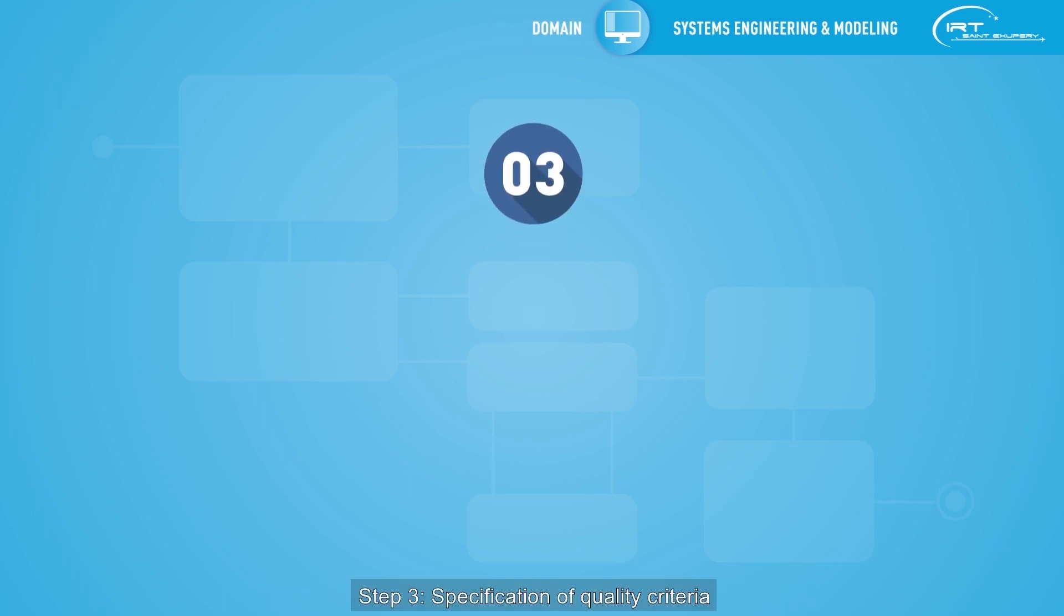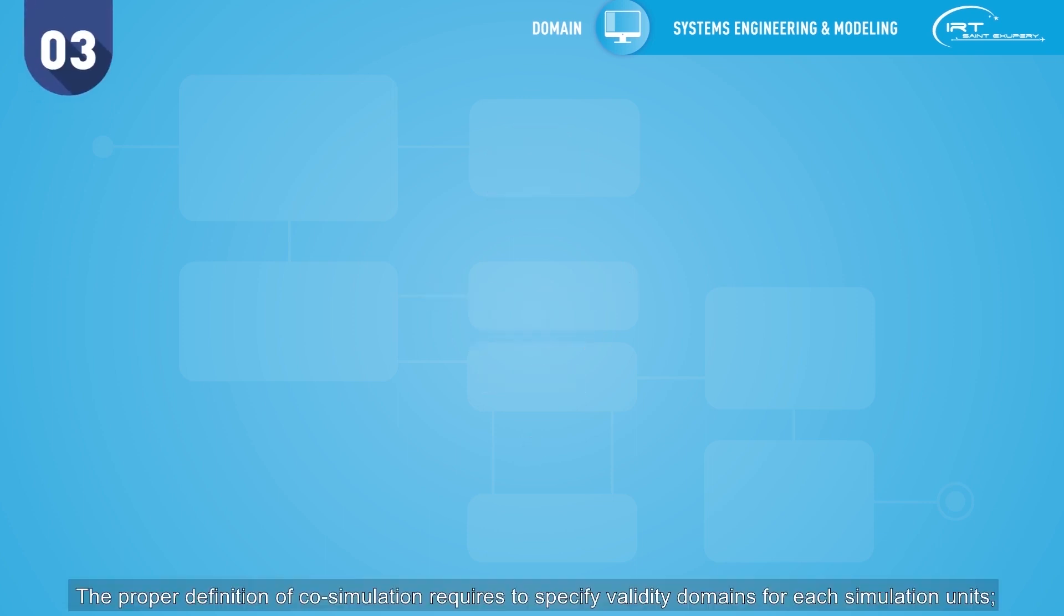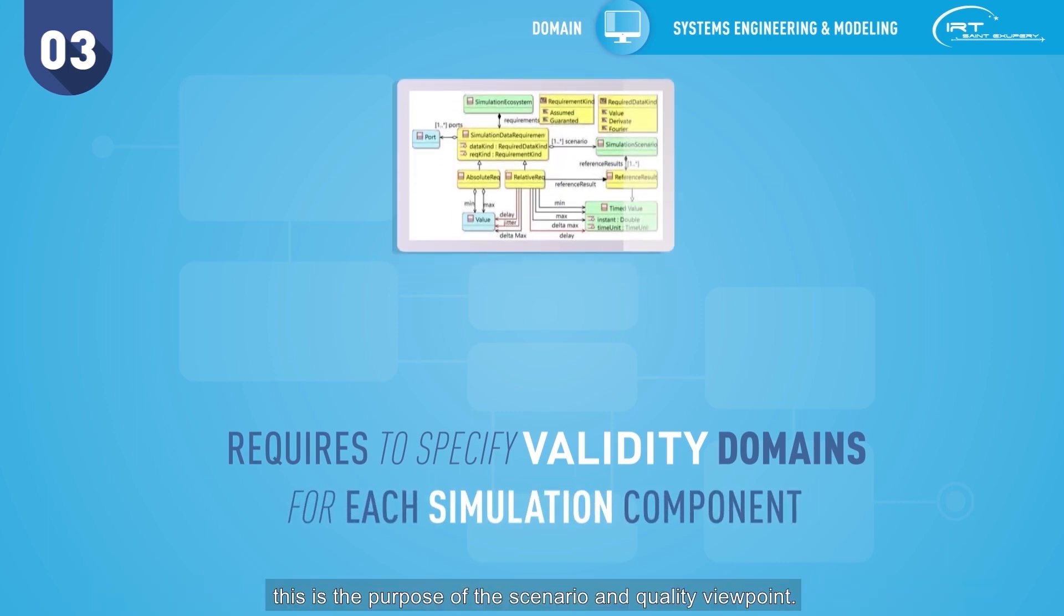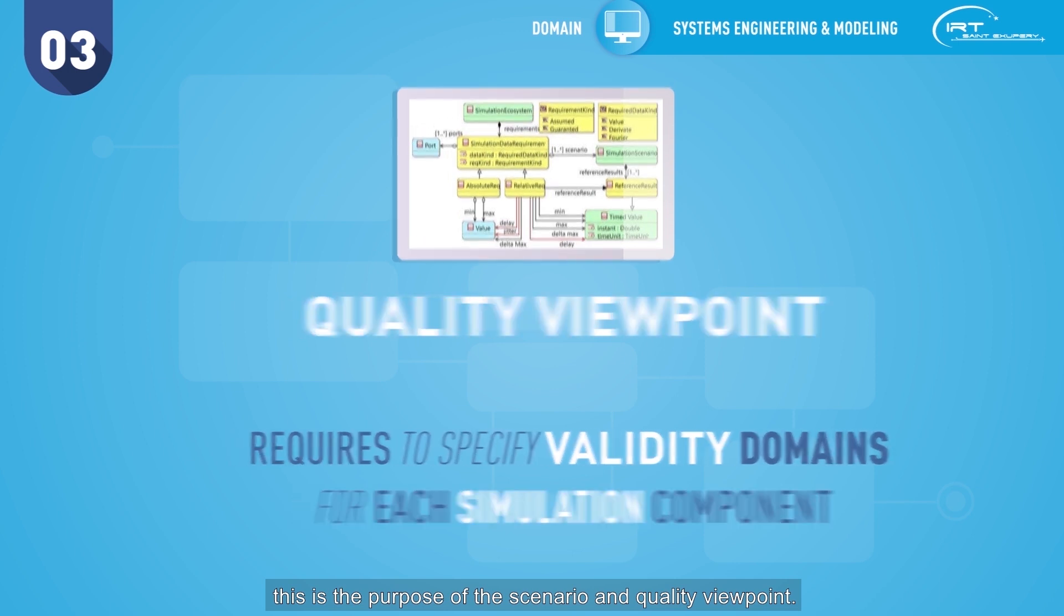Step 3: specification of quality criteria. The proper definition of co-simulation requires to specify validity domains for each simulation unit. This is the purpose of the scenario and quality viewpoint.